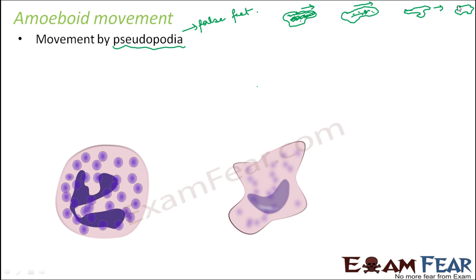Amoeba does not have true feet — the protoplasmic extensions act as feet, which is why they are known as false feet. This also helps to engulf food. If there is a food particle nearby, the protoplasm extends around it, surrounds the food completely, and then takes it inside. So pseudopodia not only helps in locomotion but also helps to engulf food.